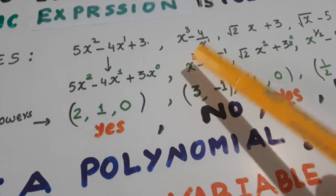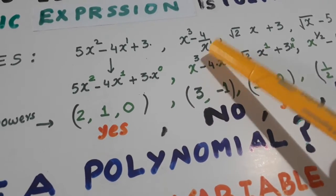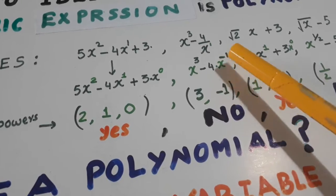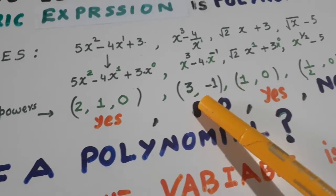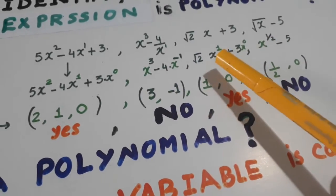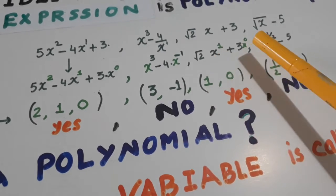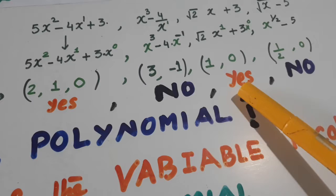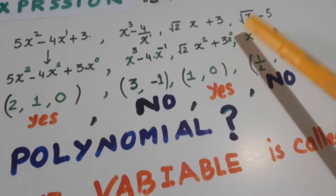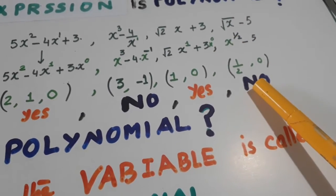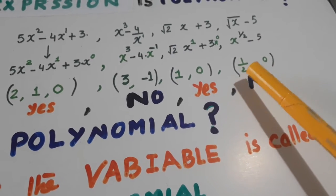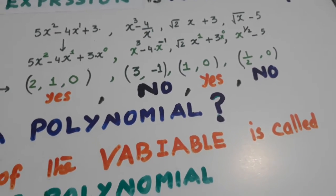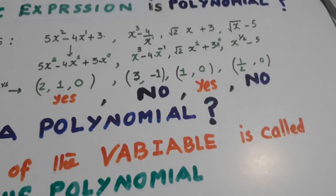Yahan pe x power 3 hai, yahan pe x power minus 1 hai. Niche 1 over x tha, oopar chala gai hai, toh power minus 1 ho gai. It is not a polynomial. Here power of x is 1 and 0, so it is a polynomial. Here power is 1 by 2 - root kohat a do 1 by 2 - power cannot be 1 by 2 because it is not a whole number, so it is not a polynomial.